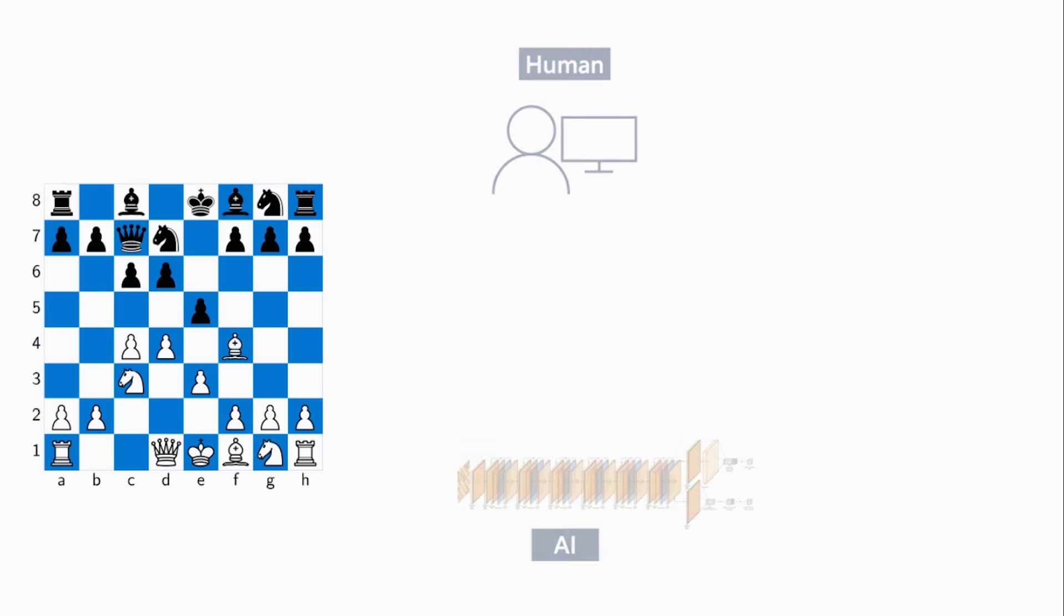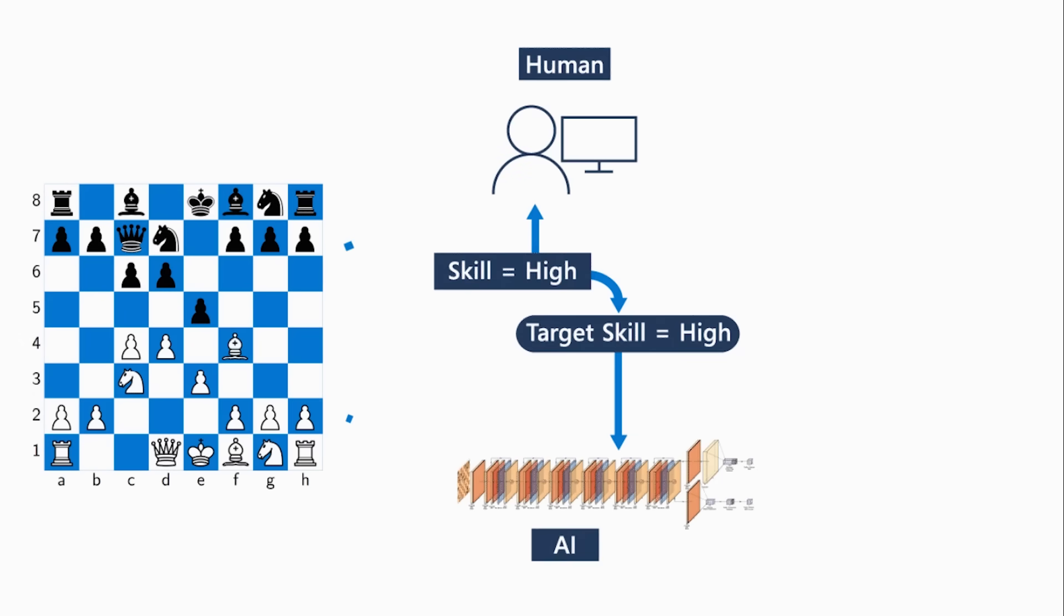Now it's one thing to tell someone what that move is, it's another thing to explain to them why that's the move they should make. And it's not always clear that every person will understand that move because it's the best move. So what the Maya project does is it tries to develop an AI engine that can do a better job of understanding human play.